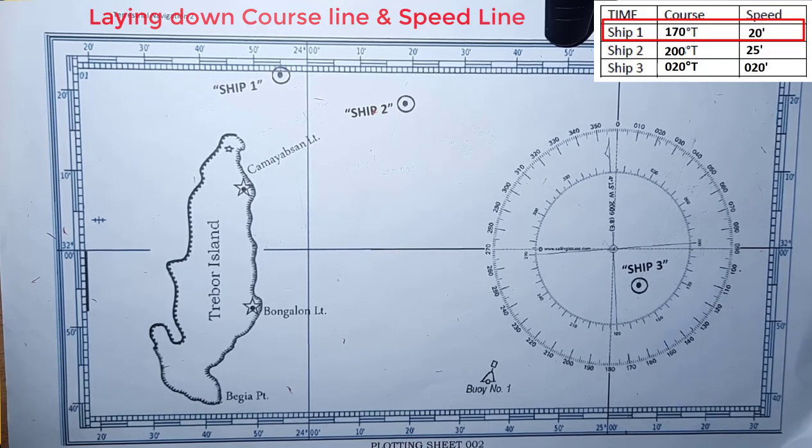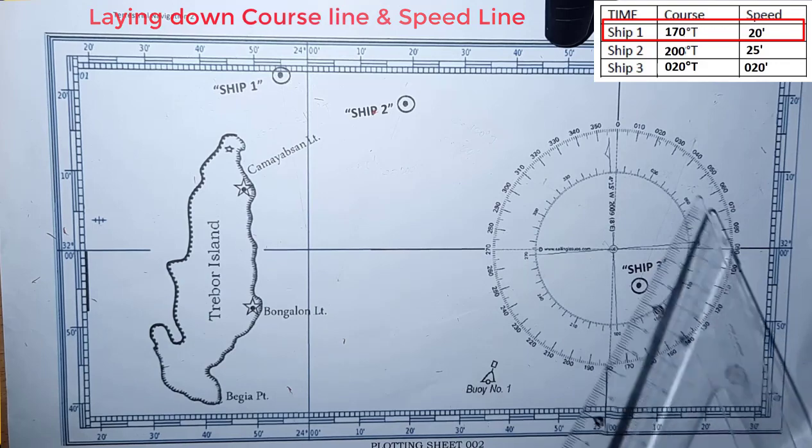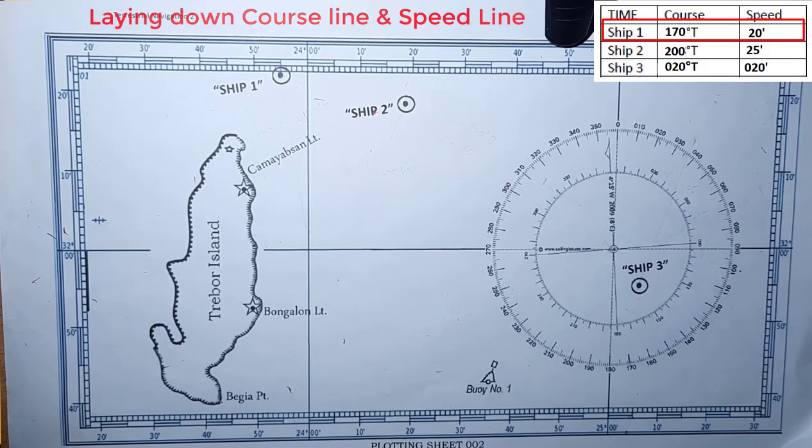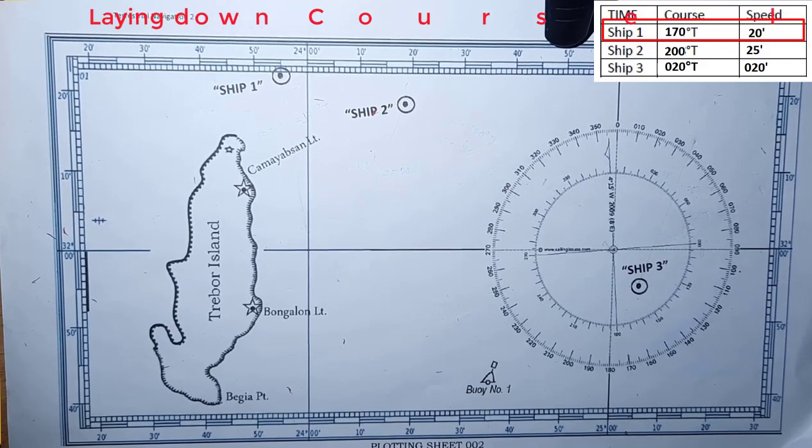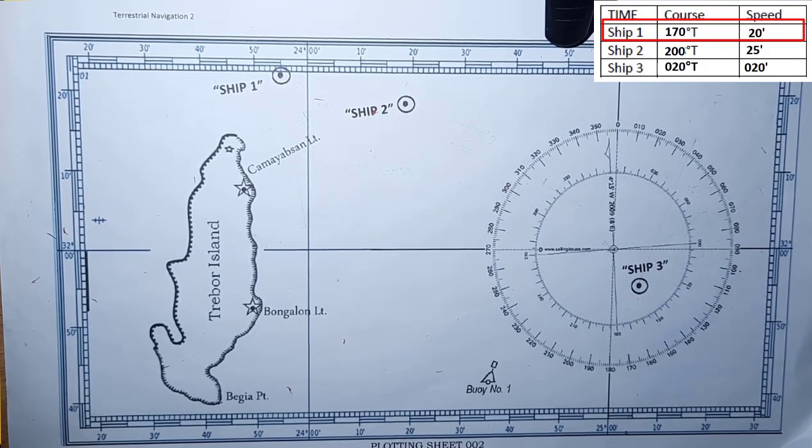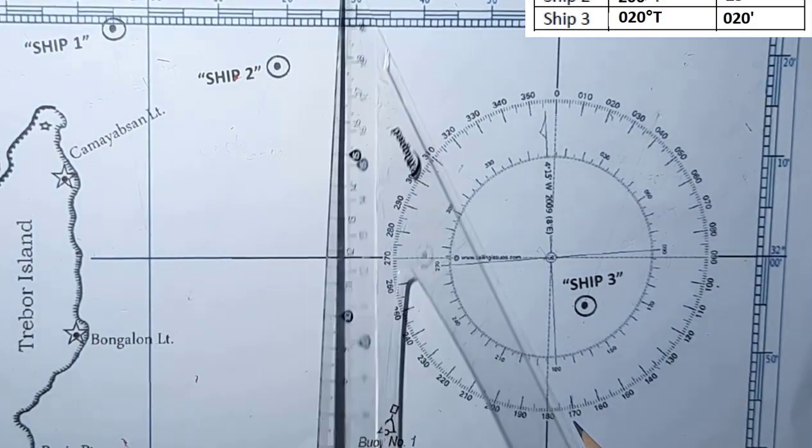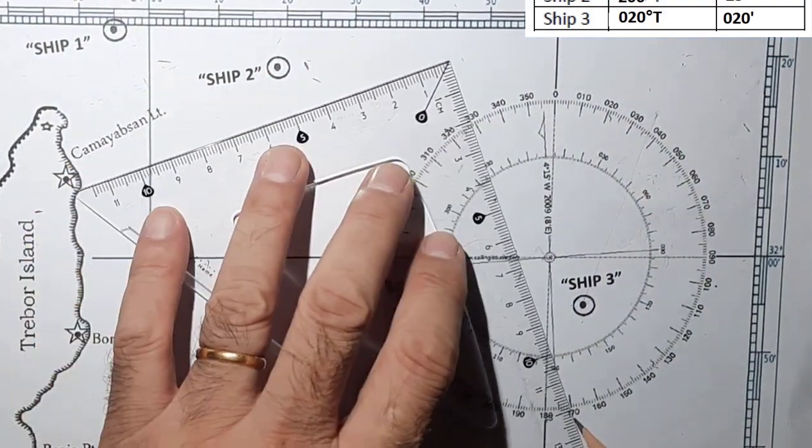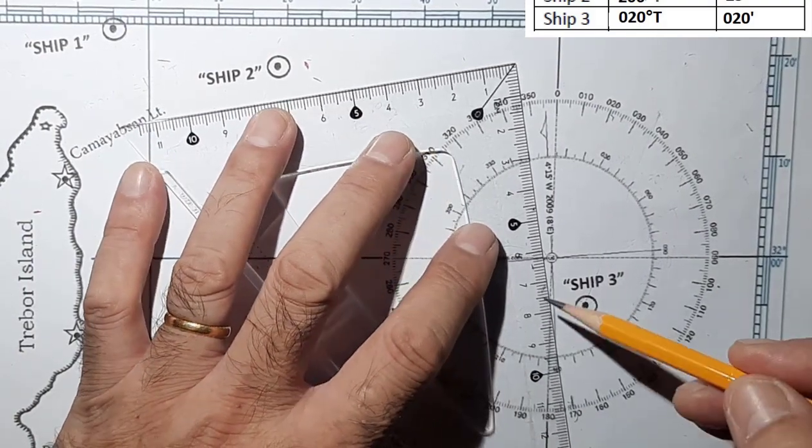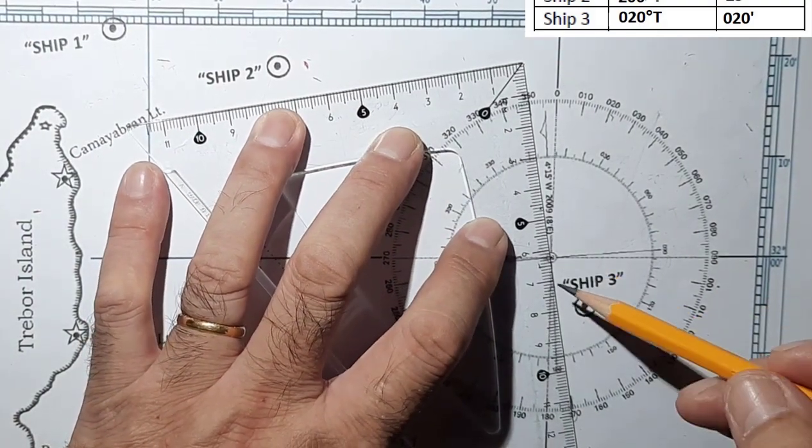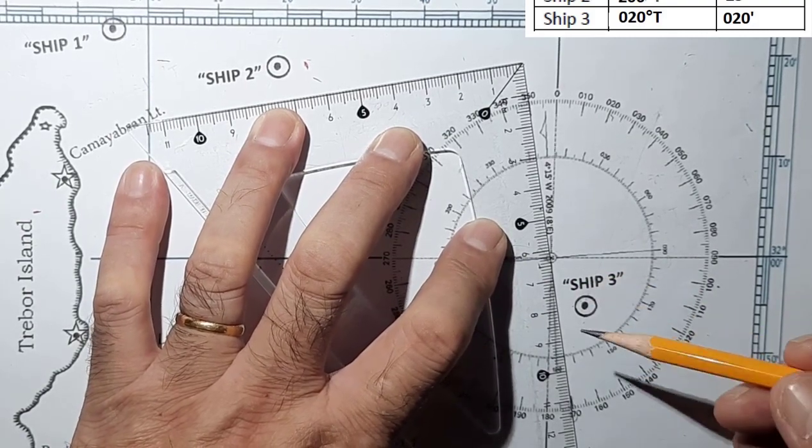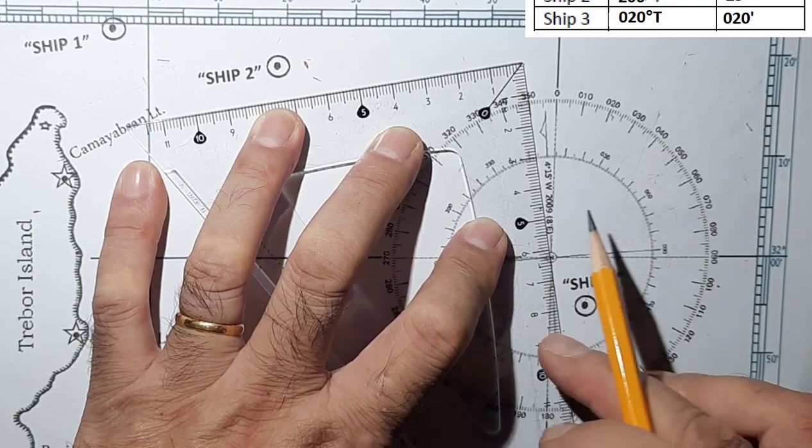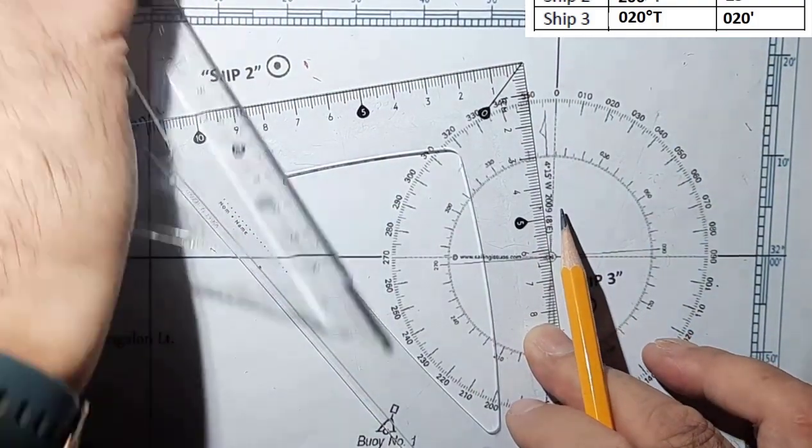You do it using the compass and your very reliable triangles. So first locate 170 degrees, this one here, and put your compass at the center and using the triangle. It needs practice. So 170, put the other here.